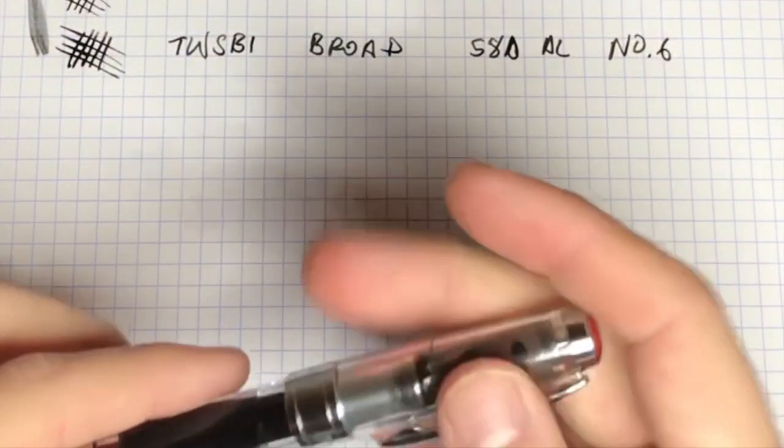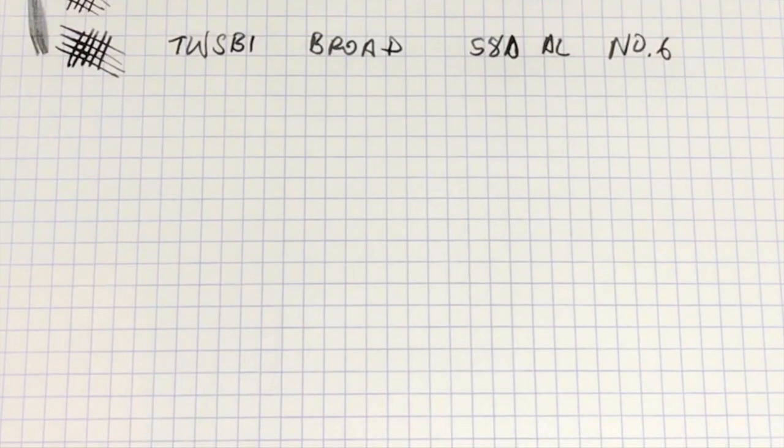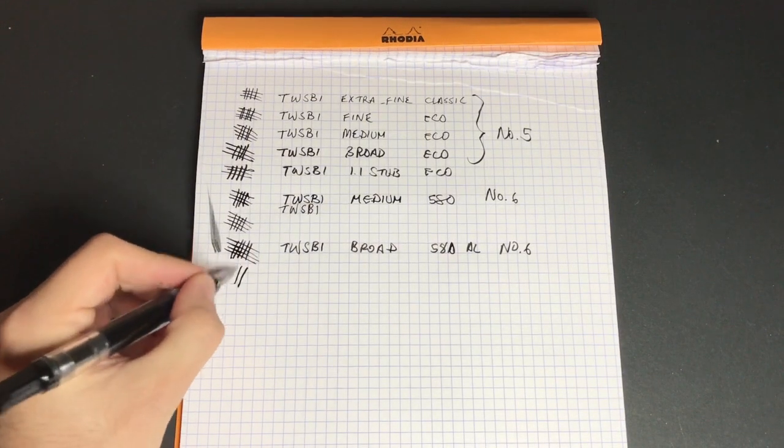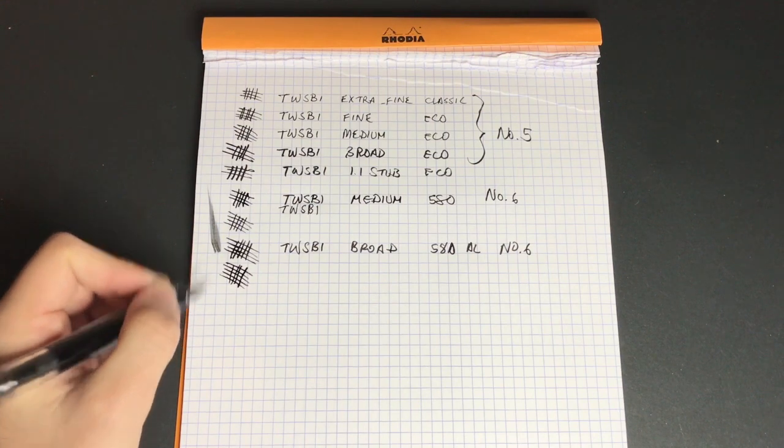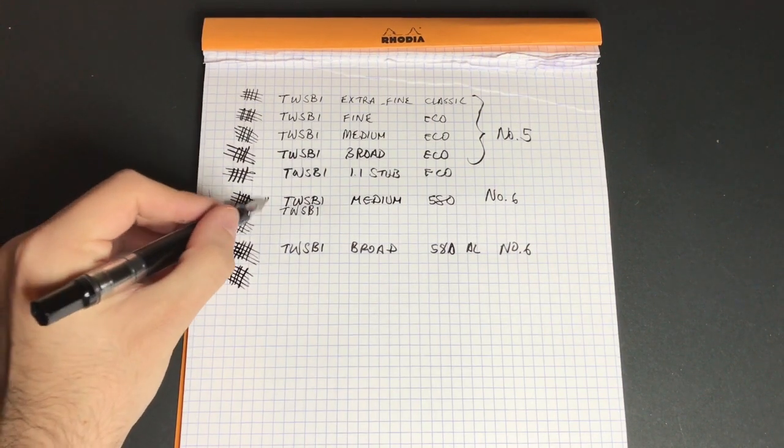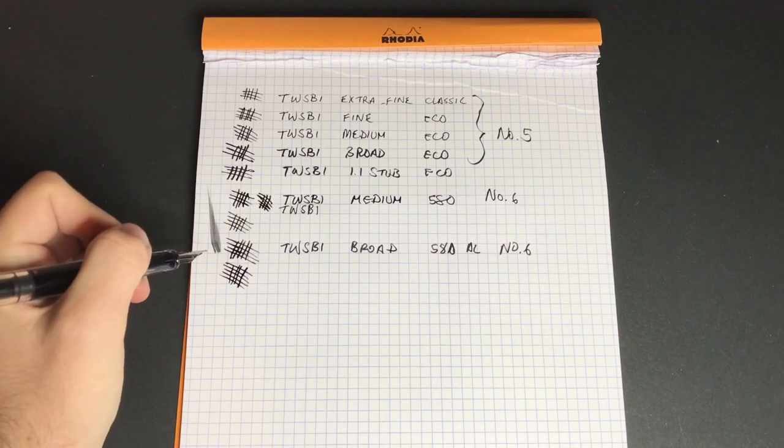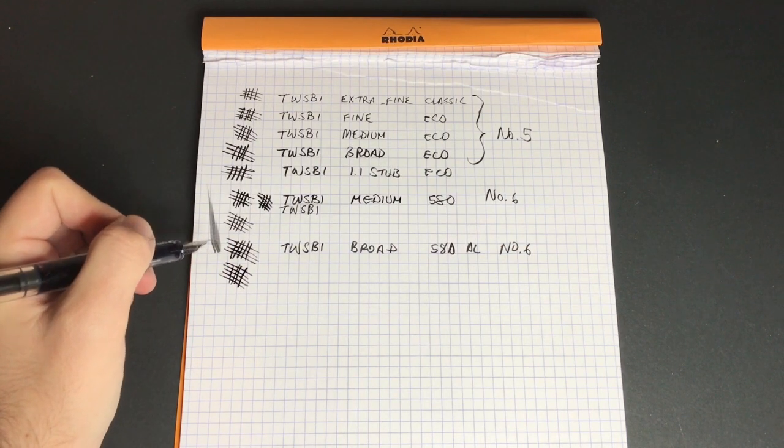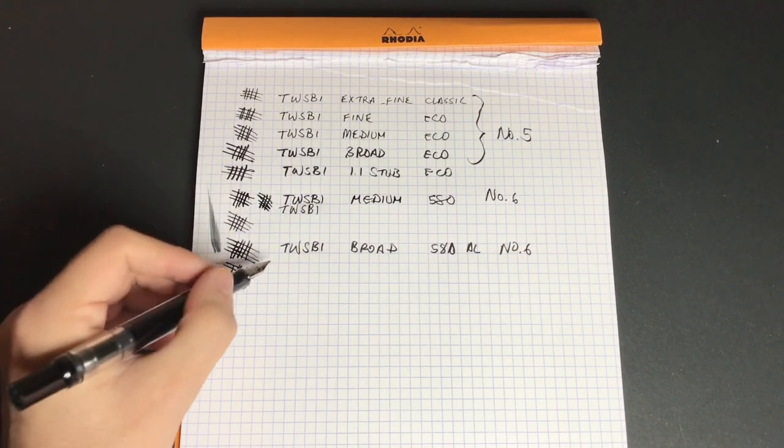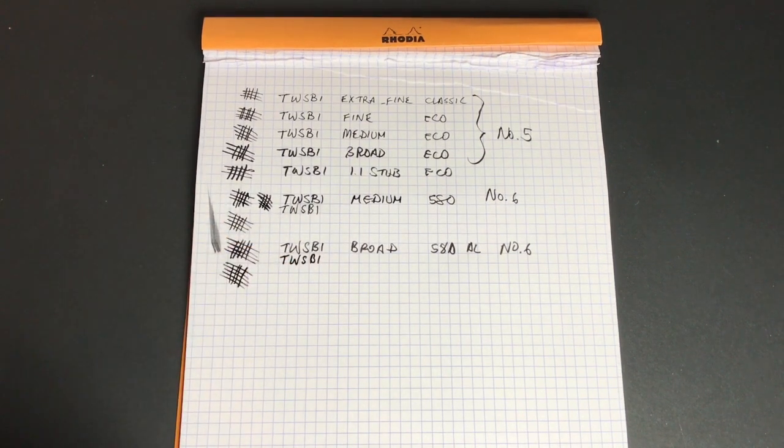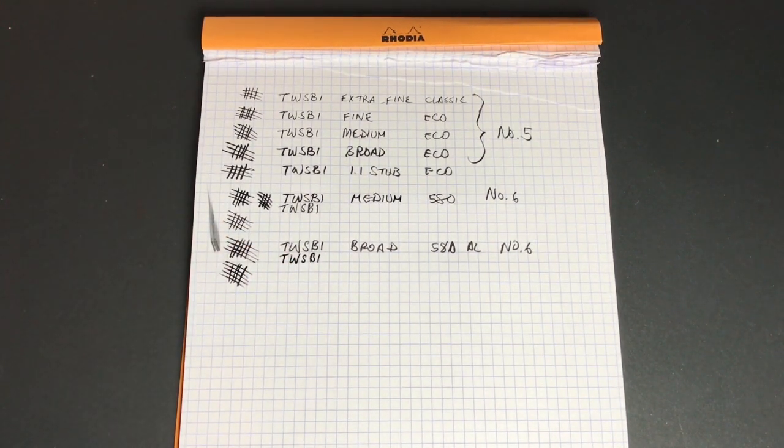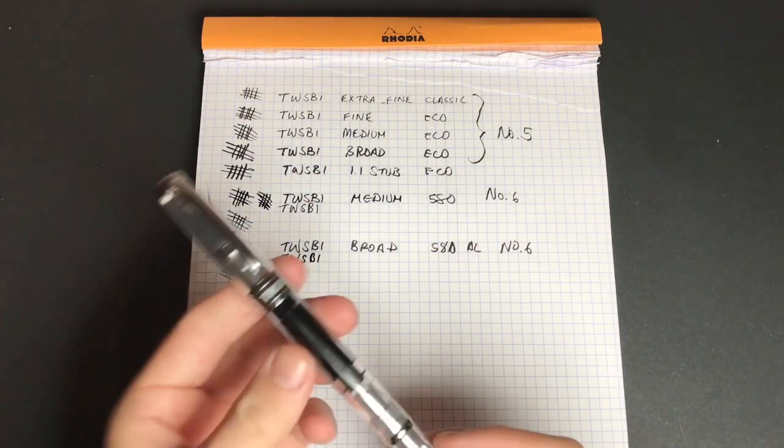And if we compare that to the broad on the Eco, the line is much more similar. In fact, the line here between the medium 580 and the broad in the Eco is not that different. So yeah, we get a lovely broad on the Eco and the 580 AL.